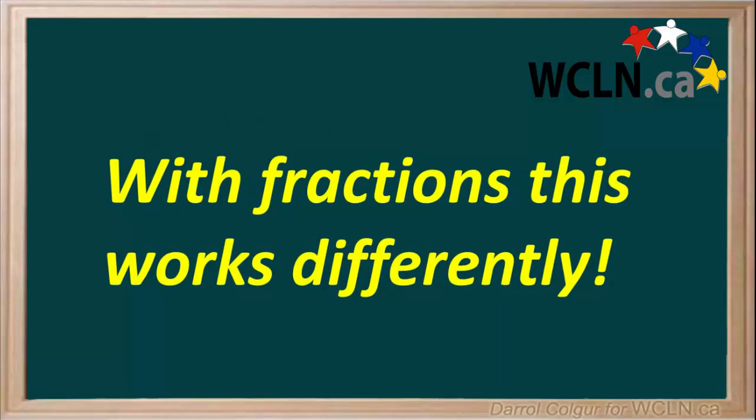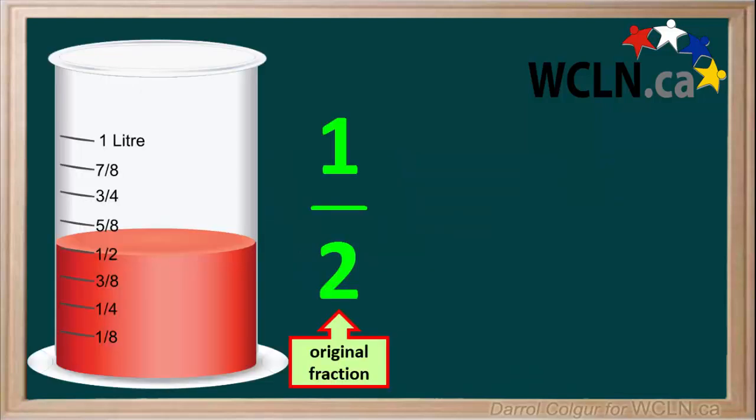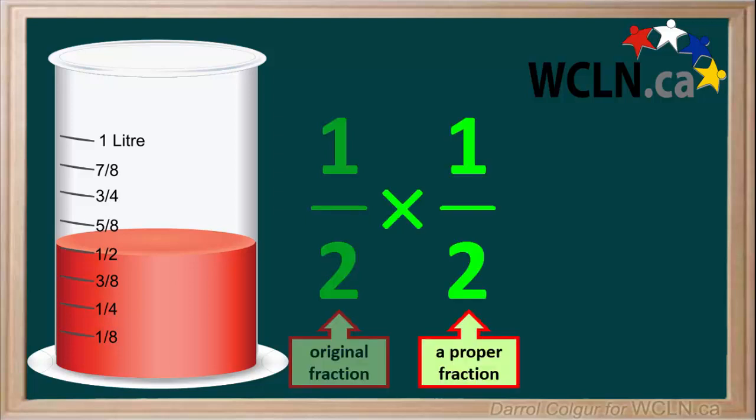However, with fractions, this works differently. Let's say our original fraction is 1 half, which we'll represent as a half-full beaker. And we'll multiply the original fraction by the proper fraction, 1 half.